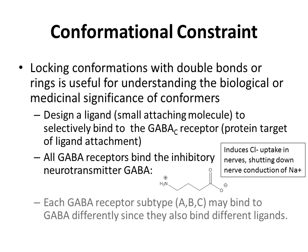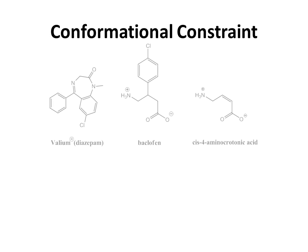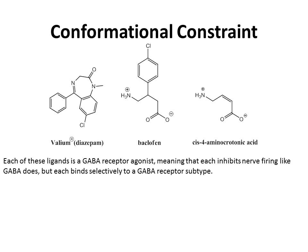Each GABA receptor subtype — A, B, or C — may bind to GABA differently, since they also bind different ligands. Let's take a look at three ligands, each of which selectively binds to one GABA receptor subtype. We have valium, baclofen, and cis-4-amino crotonic acid. Each of these ligands is a GABA receptor agonist, meaning that each inhibits nerve firing like GABA does, but each binds selectively to a GABA receptor subtype.